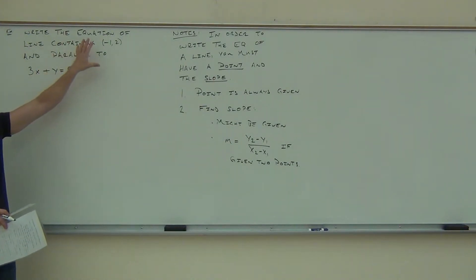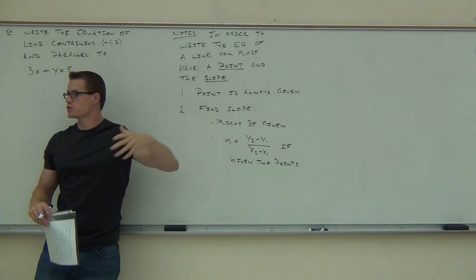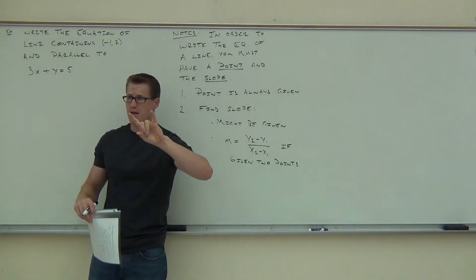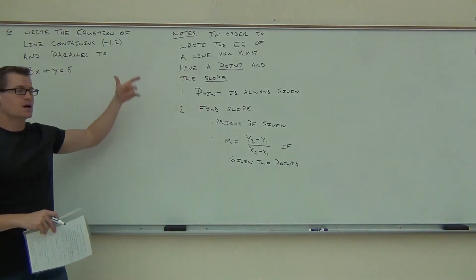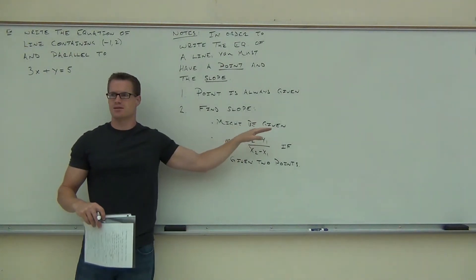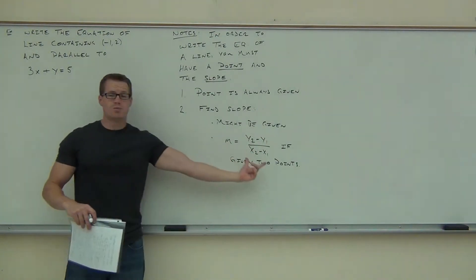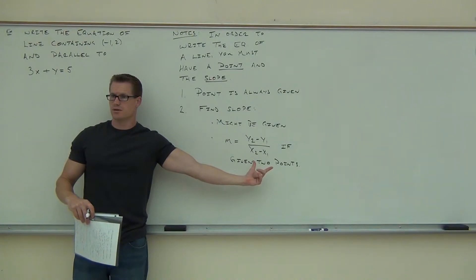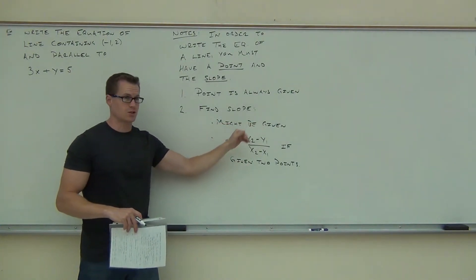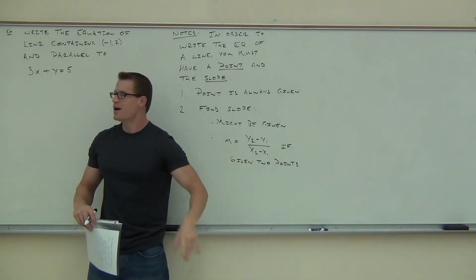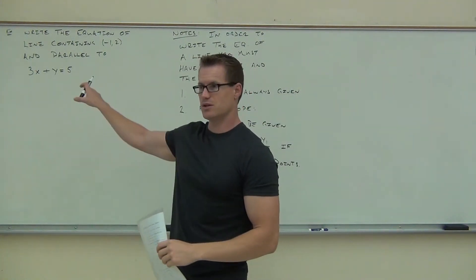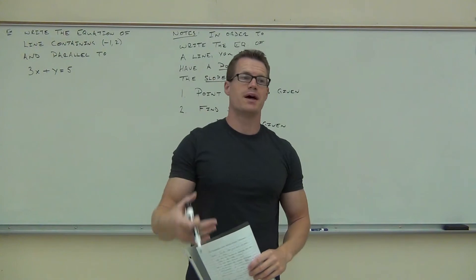Let's check out this example. We're trying to write the equation of the line containing a certain point — automatically our point is given. We also have to find the slope. Is the slope directly given to you? No. Am I given two points? No. So there's got to be a third situation: if you're not directly given the slope and you don't have two points, you might be given another equation, and we need to find the slope from that equation.